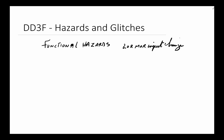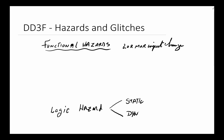The output could be dynamic — it adds a few changes before it settles down to the correct output. We'll look at functional hazards first, then talk briefly about whether we can do anything about them, and then move into the other kind of hazard — logic hazards. Each of these could have two kinds: static or dynamic, depending on whether the output changes multiple times or just stays constant with one glitch in it.